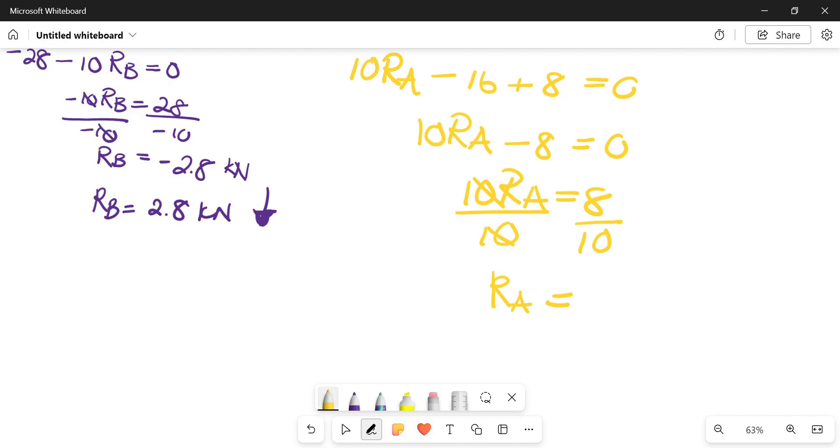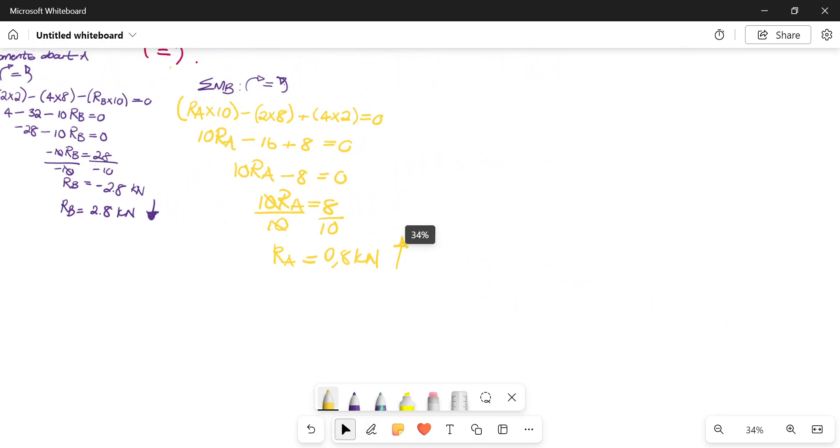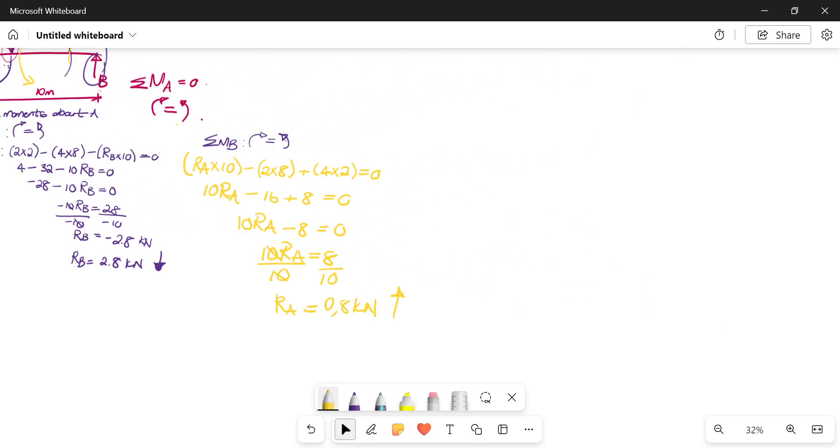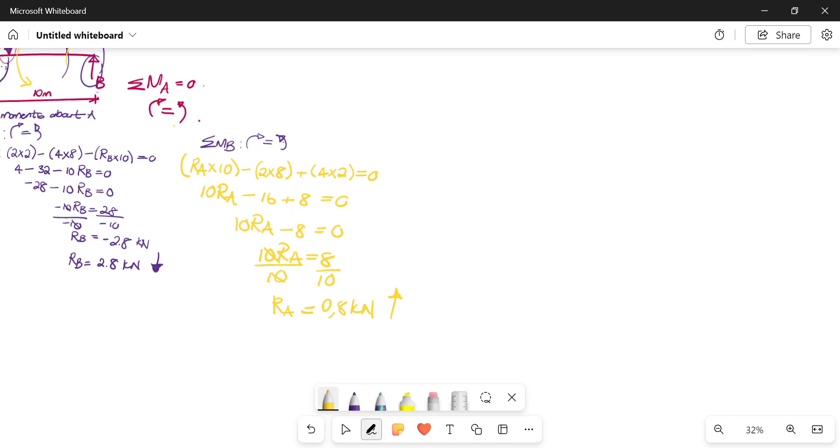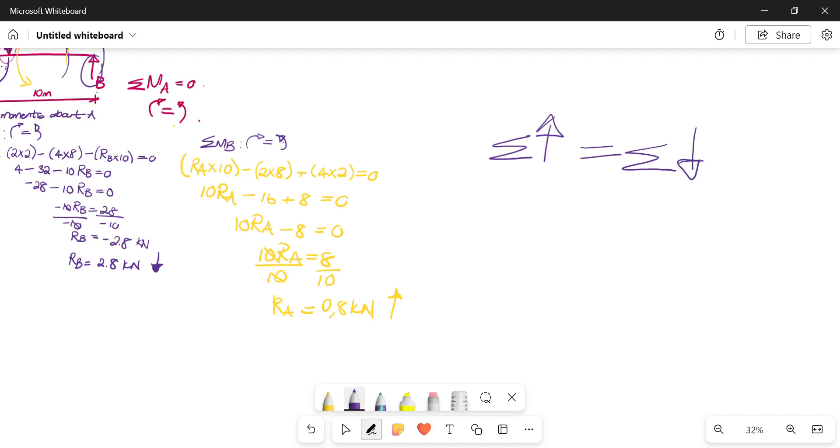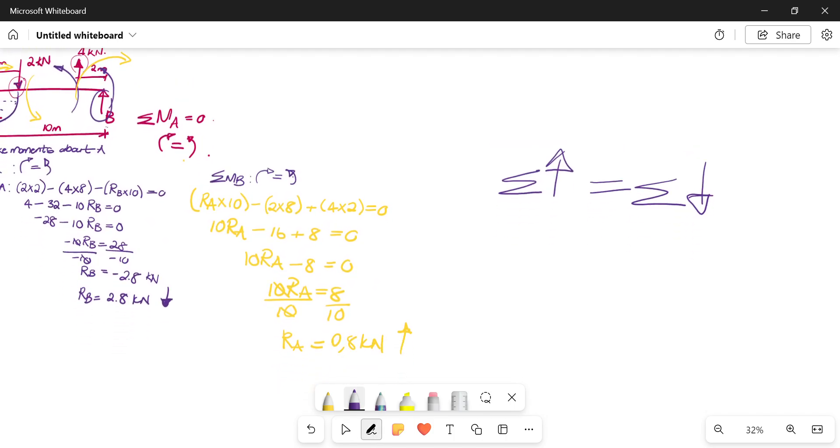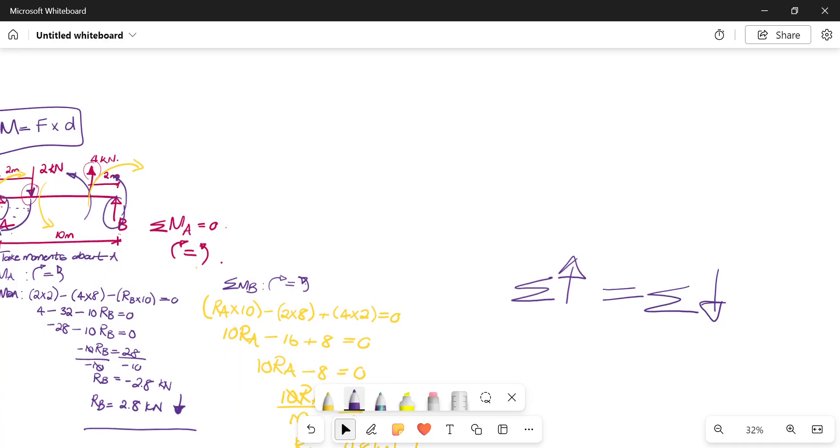RA is 0.8 kilonewtons. And since it's positive, it means we assumed correctly it is going up. Okay? Then there is one final step, and that is essentially how you go about checking. So next you're going to say the sum of your upward forces should be equal to the sum of your downward forces. This is how you check yourself to check if your answers are correct.